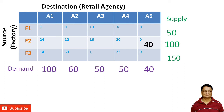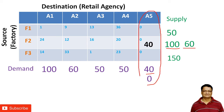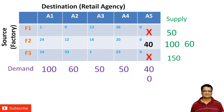The demand here is 40 and supply is more than 40. When I allocate 40 here, the supply reduces to 60 and this dummy column's demand is exhausted. So I place a cross here because no further allocation is needed in this column, and I will not consider this column going forward.